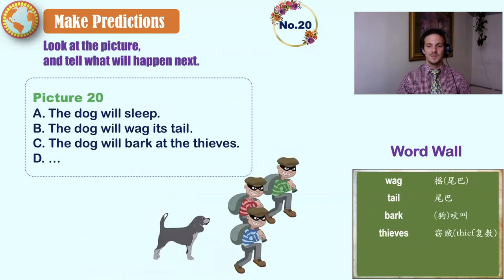Twenty. Wag, tail, bark, thieves. The dog will sleep. The dog will wag its tail. The dog will bark at the thieves. Or what do you think?